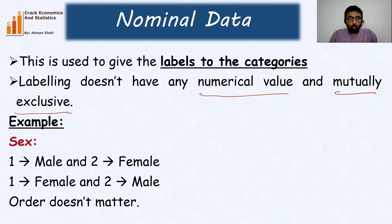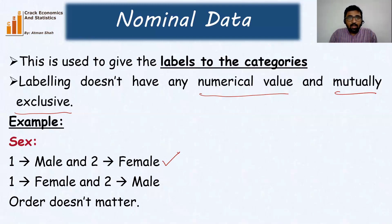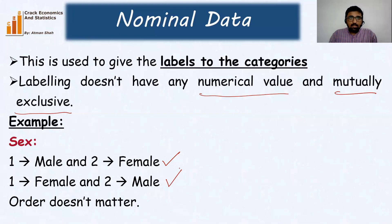The order of the code, the order of the label, does not matter at all. We have assigned one to male and two to female, but we can also assign one to female and two to male. So order does not matter at all, because the labels do not have any numerical value.